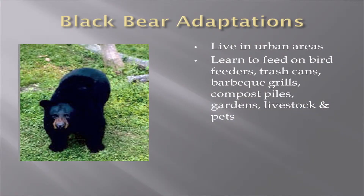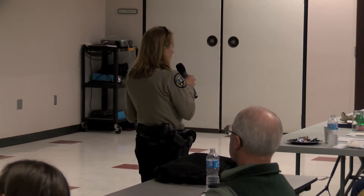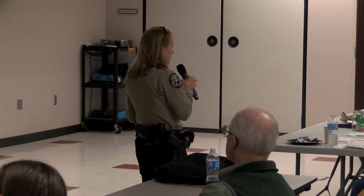What bears learn to do is feed on bird feeders, trash cans, barbecue grills, compost piles, gardens, livestock, and pets — because they need food to survive. If they can't find it because weeds are out-competing their native vegetation, then they are looking elsewhere, and that's exactly what they're doing.